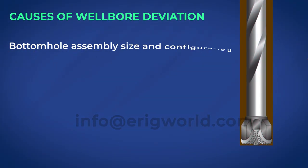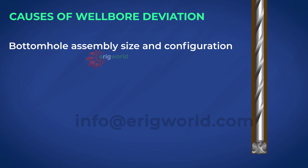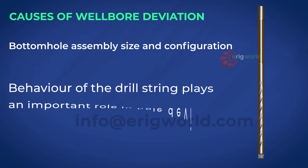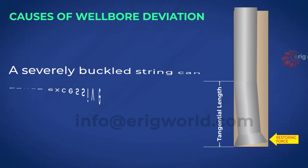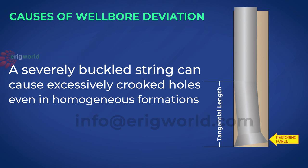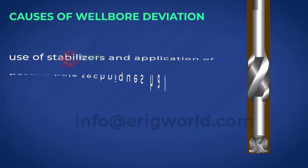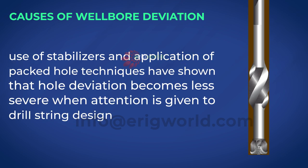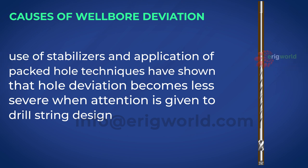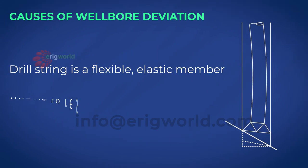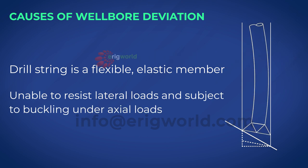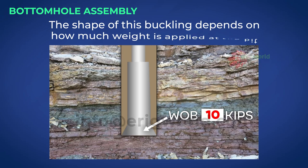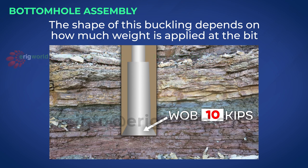Let's learn how bottom hole assembly size and configuration can cause wellbore deviation. The behavior of the drill string plays an important role in hole deviation. A severely buckled string can cause excessively crooked holes even in homogeneous formations. Use of stabilizers and application of packed hole techniques have shown that hole deviation becomes less severe when attention is given to drill string design. The drill string is a flexible elastic member unable to resist lateral loads and subject to buckling under axial loads. The shape of this buckling depends on how much weight is applied at the bit and the formation type.